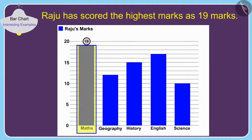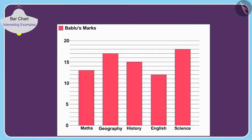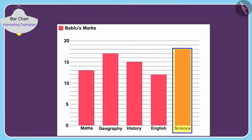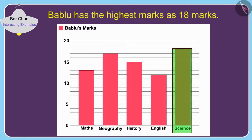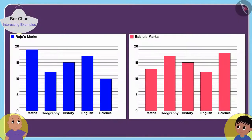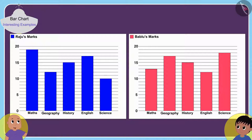The highest rectangle in Raju's bar chart is in mathematics, so Raju has scored the highest marks — 19 marks. The highest rectangle in Babloo's bar chart is in science, so Babloo has the highest marks — 18 marks.